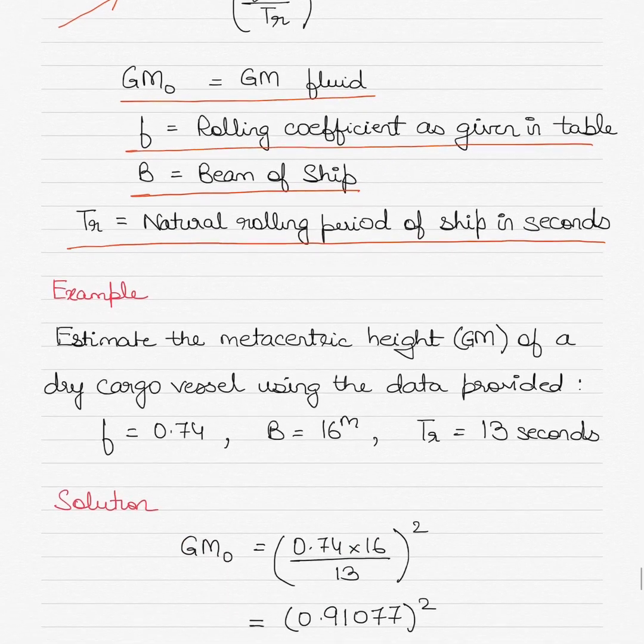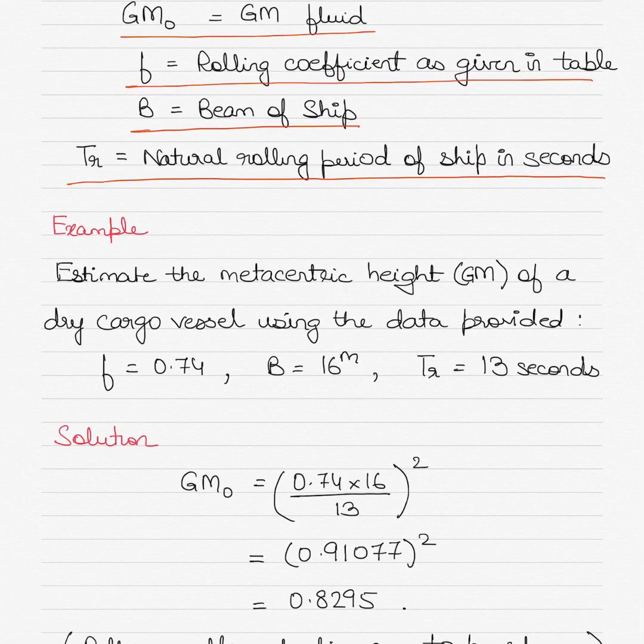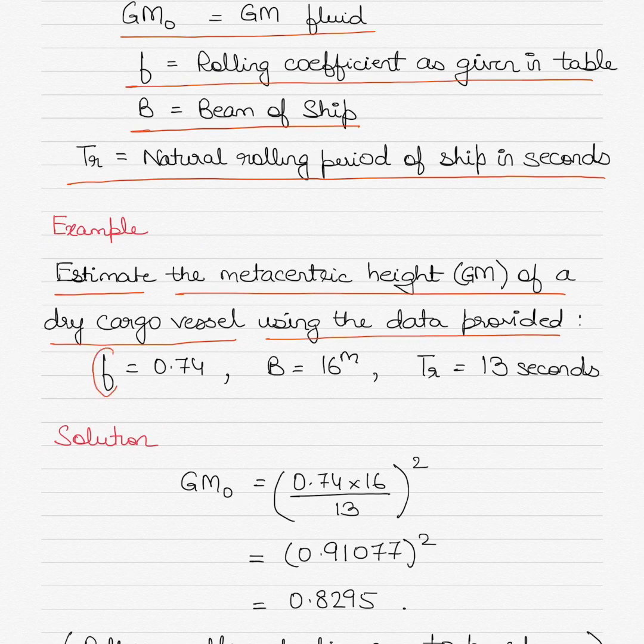For example, the question you get in the exam: estimate the metacentric height or GM of a dry cargo vessel using the following data where f is given as 0.74, beam is given as 16 meters, and rolling period is given as 13 seconds.